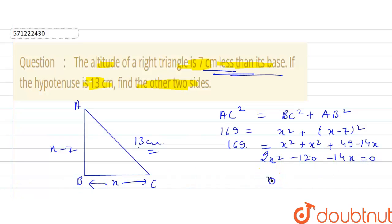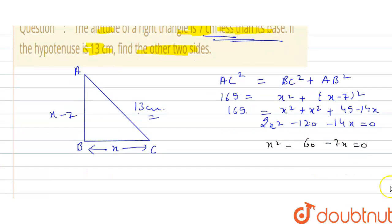Now taking 2 as common, you will get X squared minus 60 minus 7X, that is equal to 0. Now X squared minus 12X plus 5X minus 60. Taking X as common, we will get X minus 12 here, plus 5 into X minus 12 here, that is equal to 0.